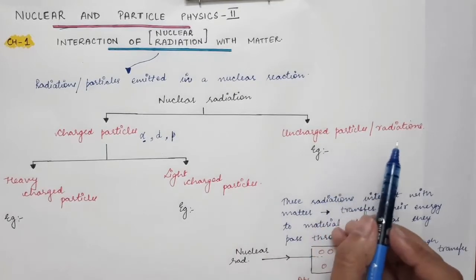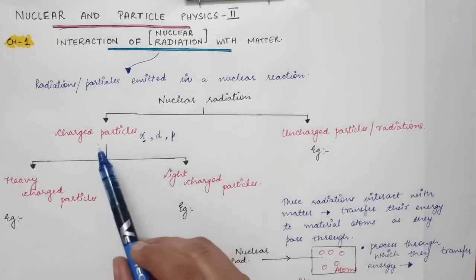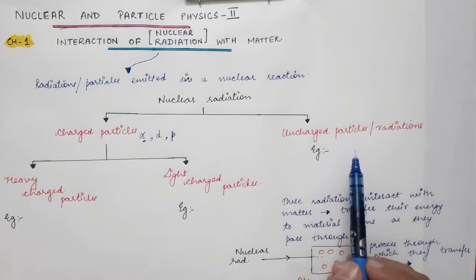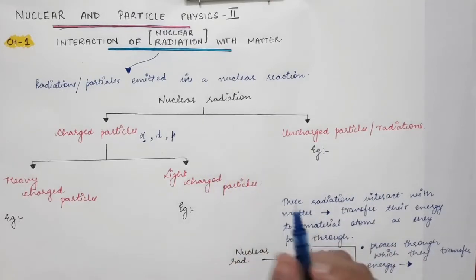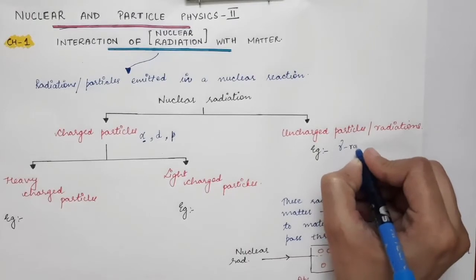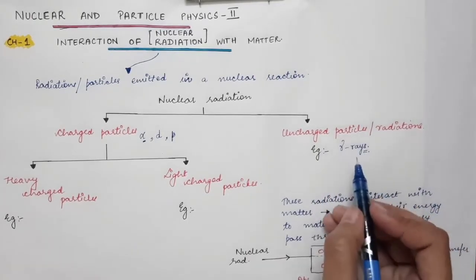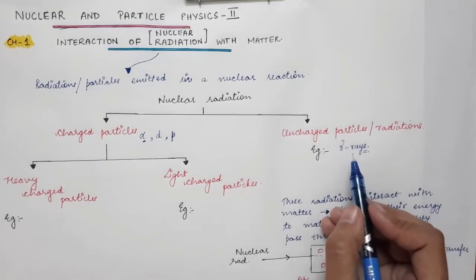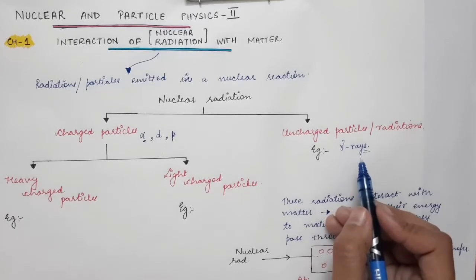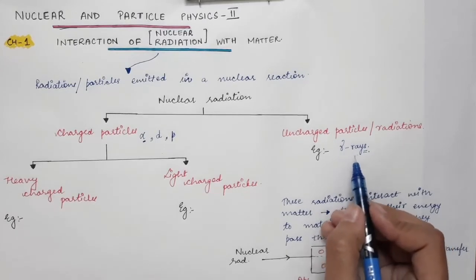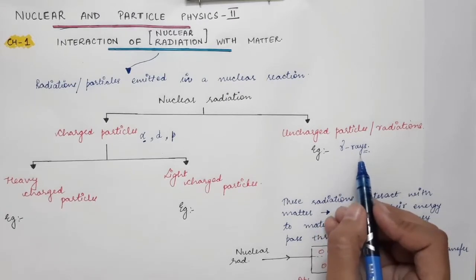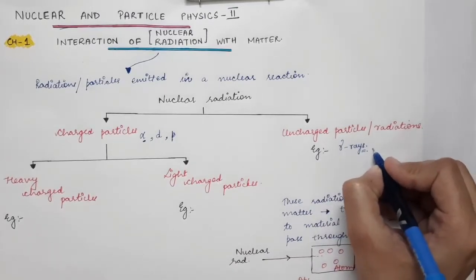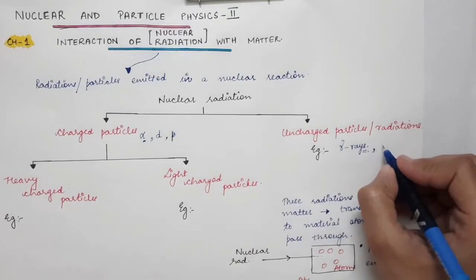The common uncharged particles or radiations that come under nuclear radiations are gamma rays and neutrons. Gamma rays are emitted when a nucleus in an excited state transitions to a lower state. These are uncharged radiations. Neutrons, also called neutron radiations, are the other common example of uncharged particles.